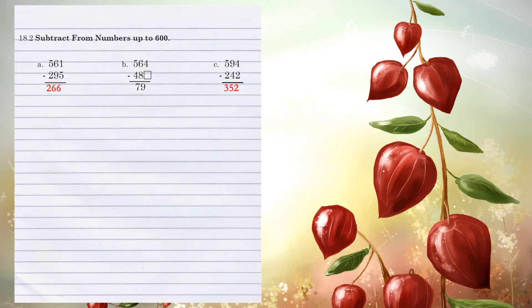Let's look at Example B. We have a missing number to fill in. 4 minus blank equals 9. That's not possible with a single digit number, so we know that at some point we had to borrow from the 6, making it a 5 and making that 4 a 14. Now we know that 14 minus 5 is 9, so 5 is our missing number.